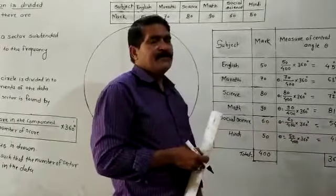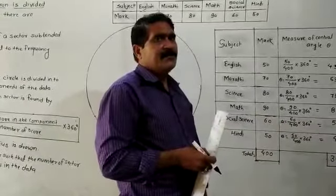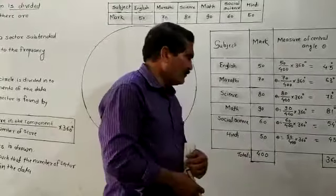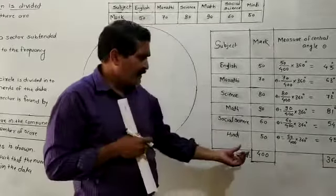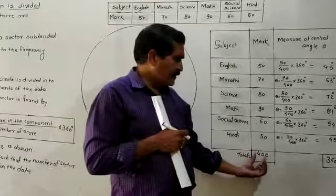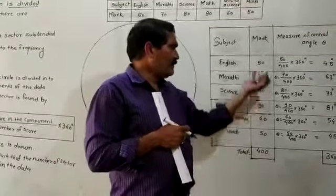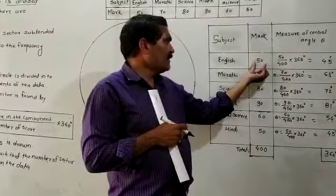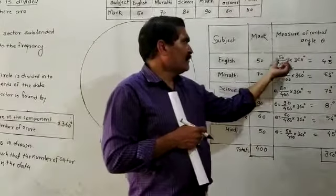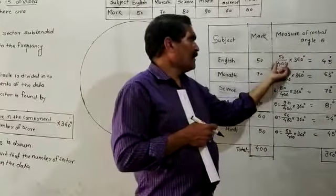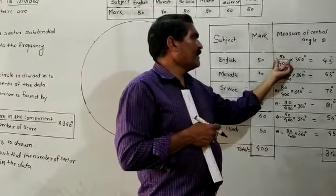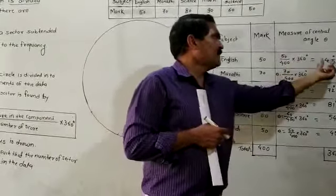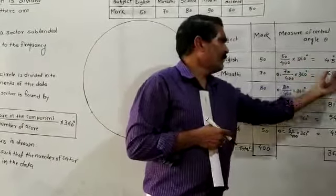From the given data, you have to calculate the central angle. Out of 400 marks, 50 marks are obtained in English. So (50/400) multiplied by 360 is equal to 45 degrees.